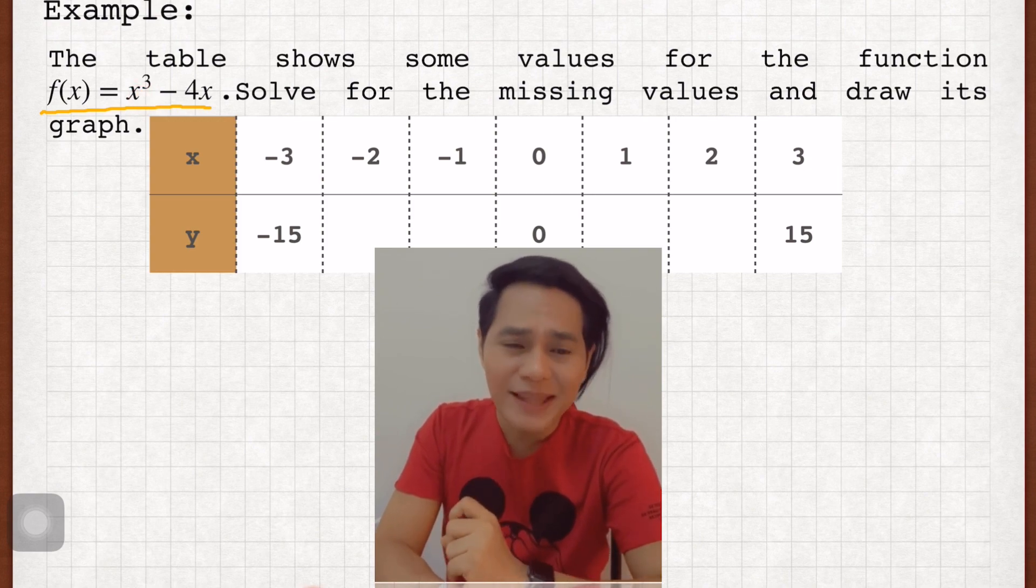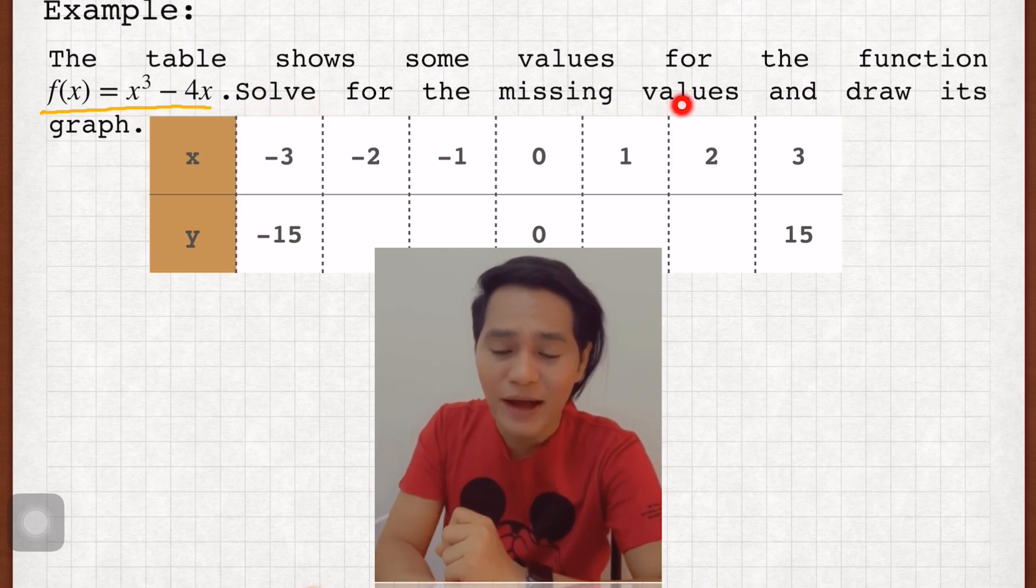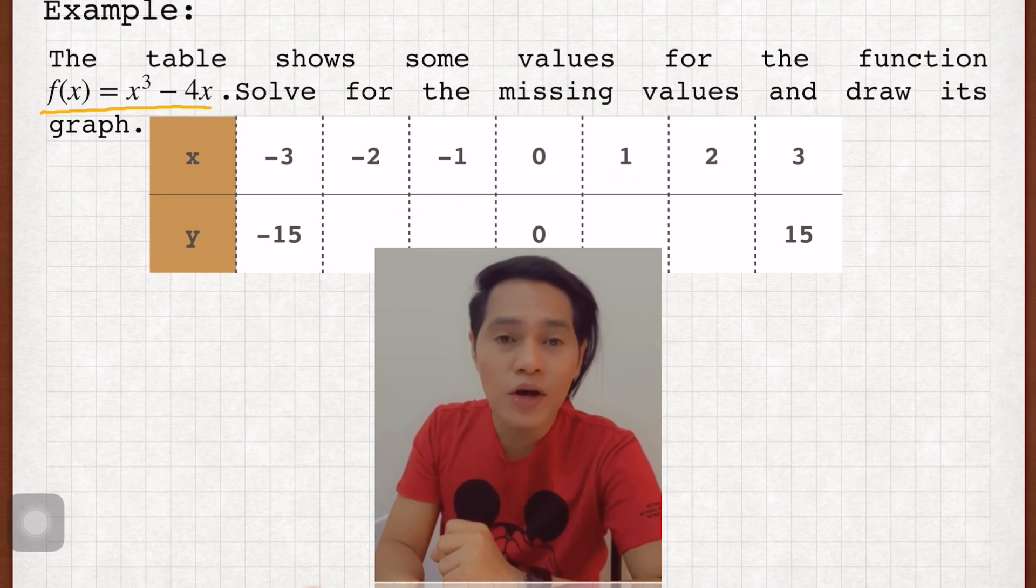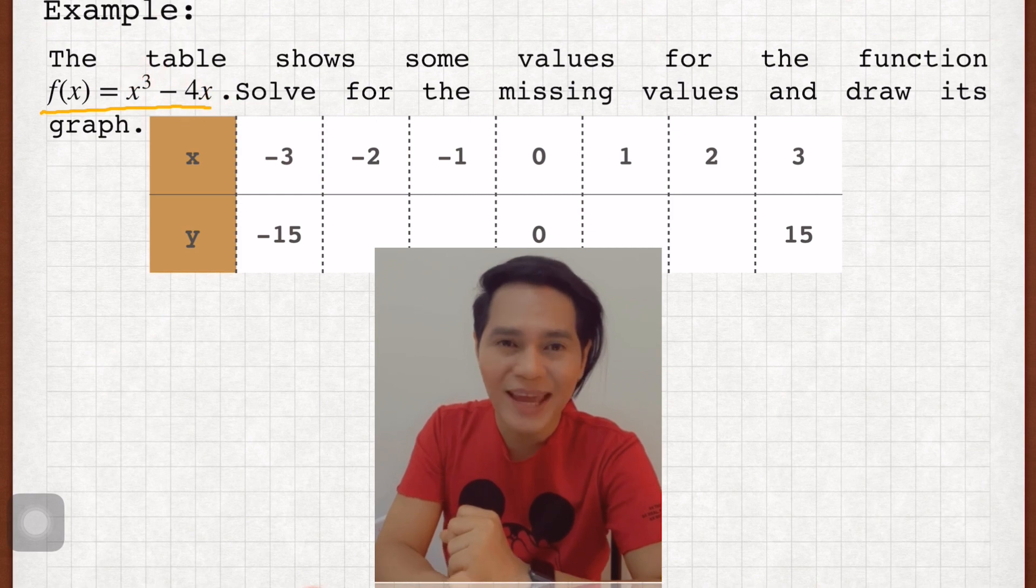Now our task here is we are going to solve for the missing values here in the given table below and we are going to draw the graph of this function f(x) = x³ - 4x. So let's start.